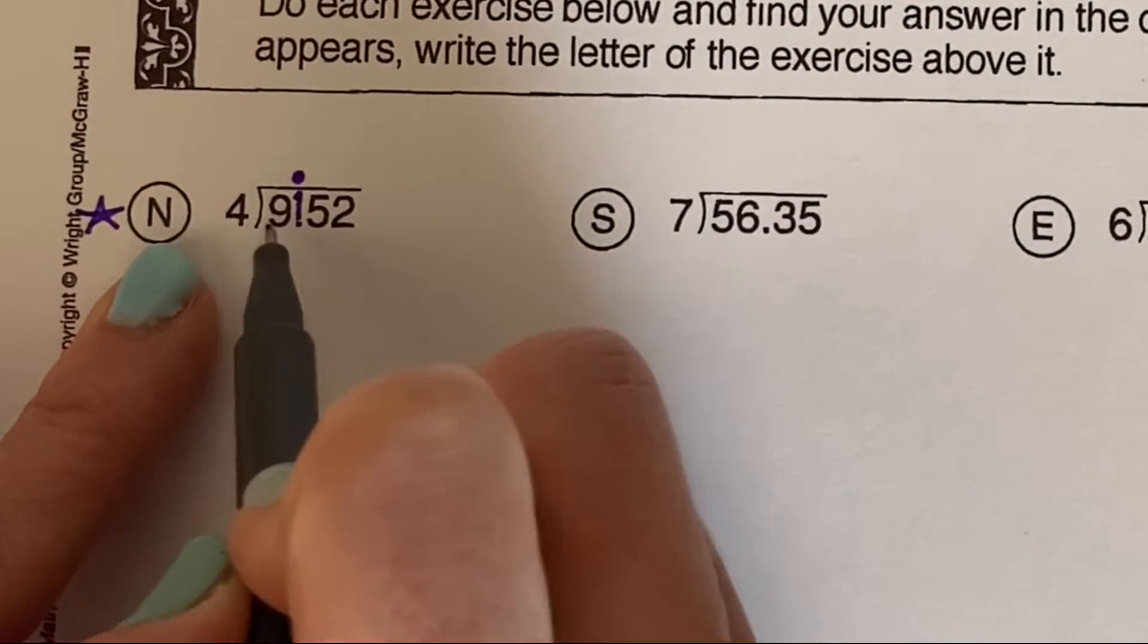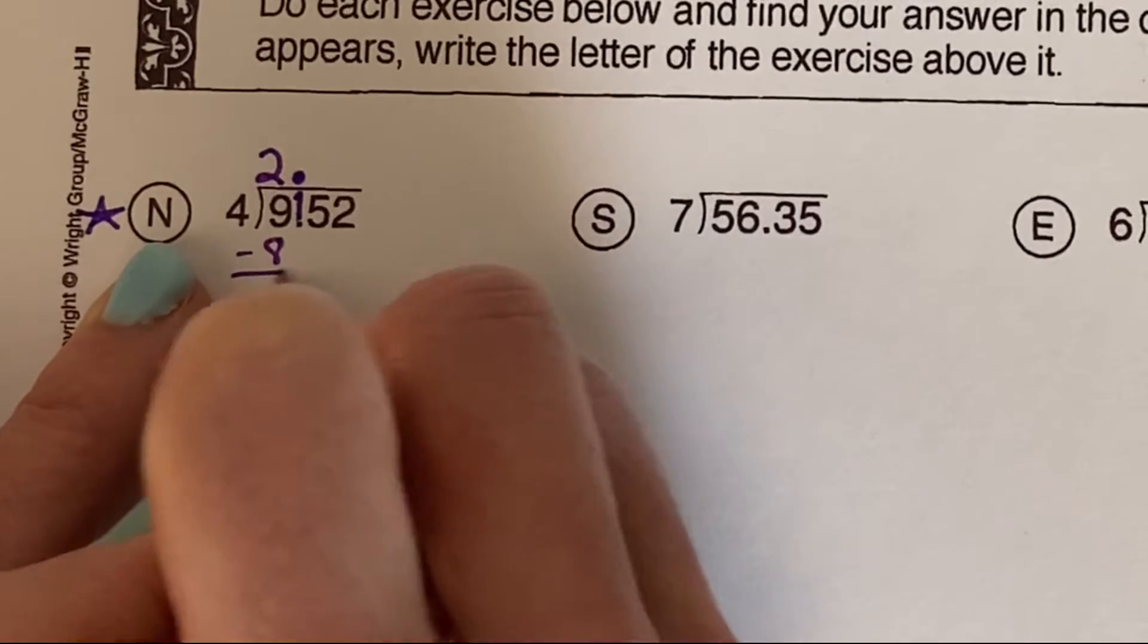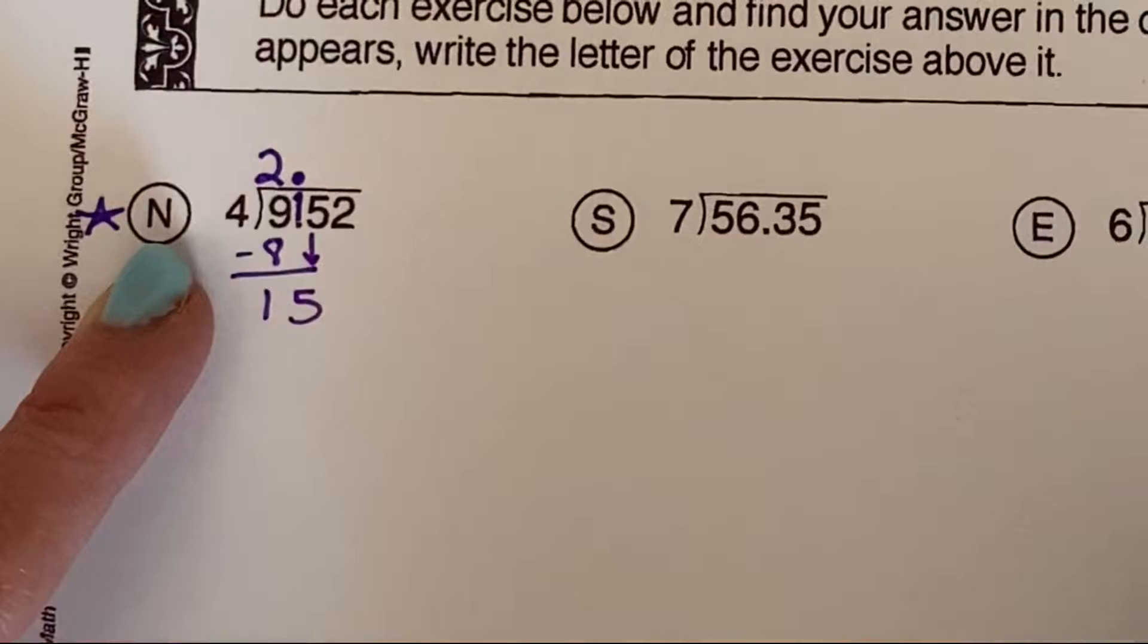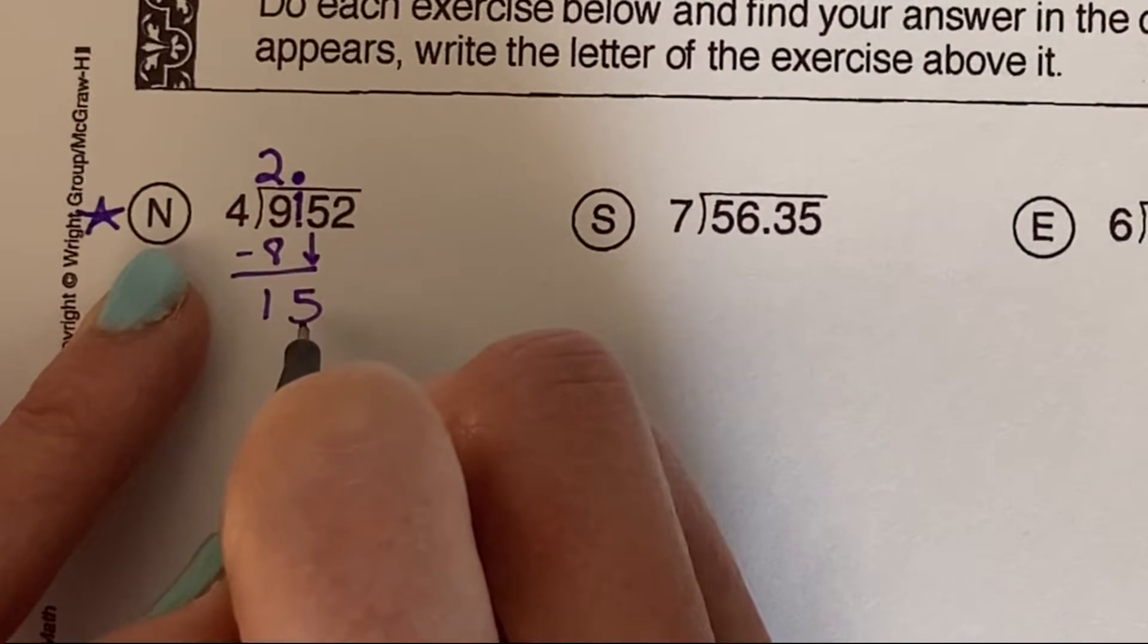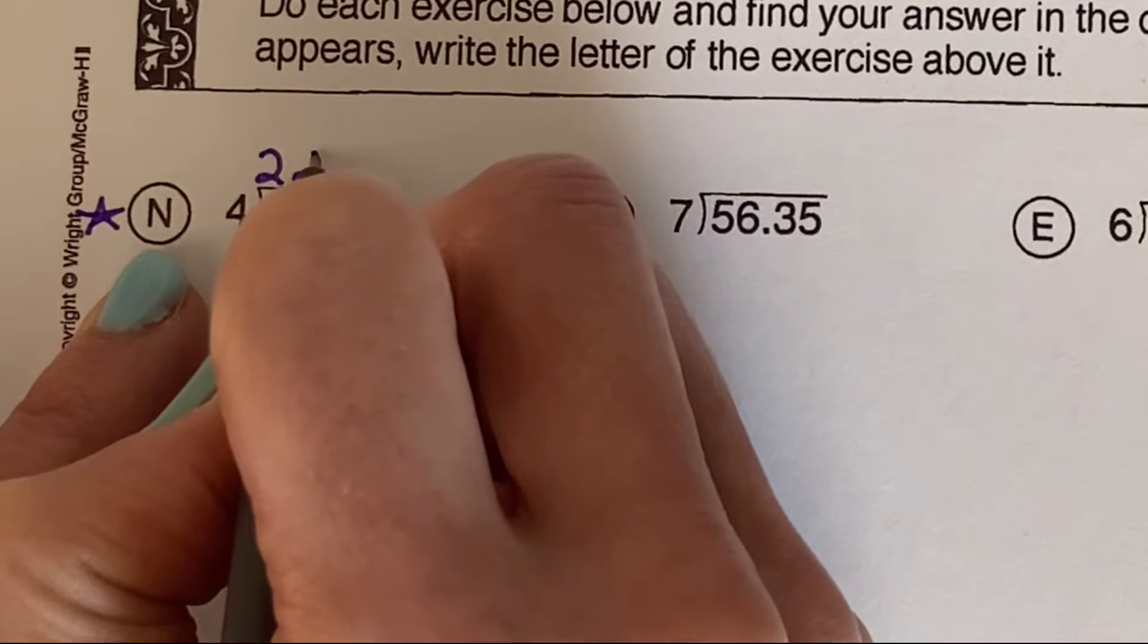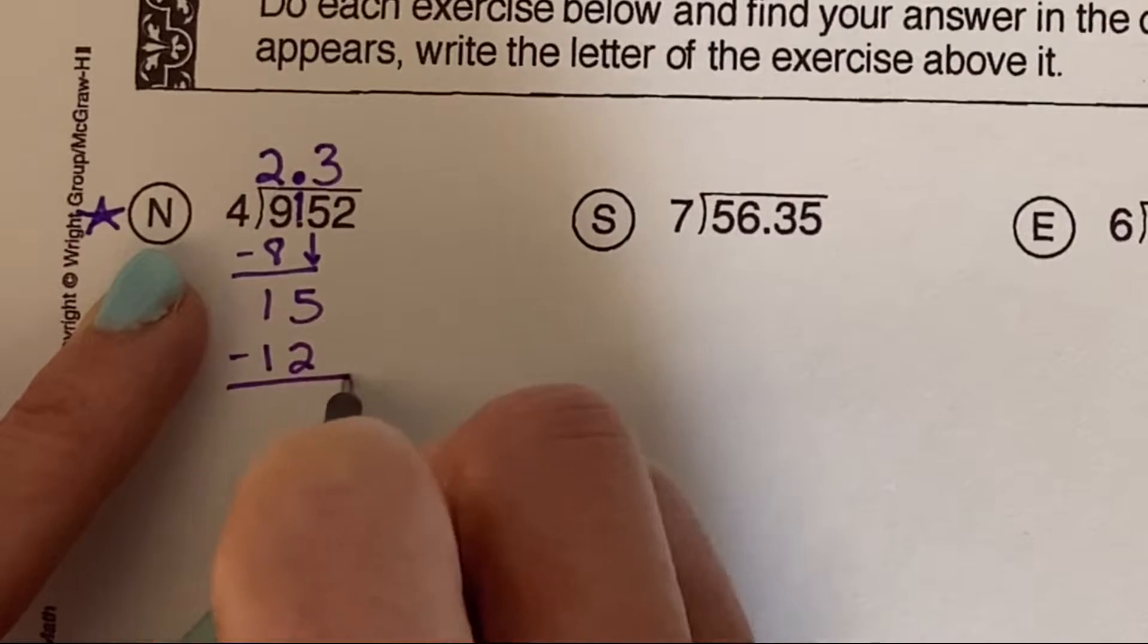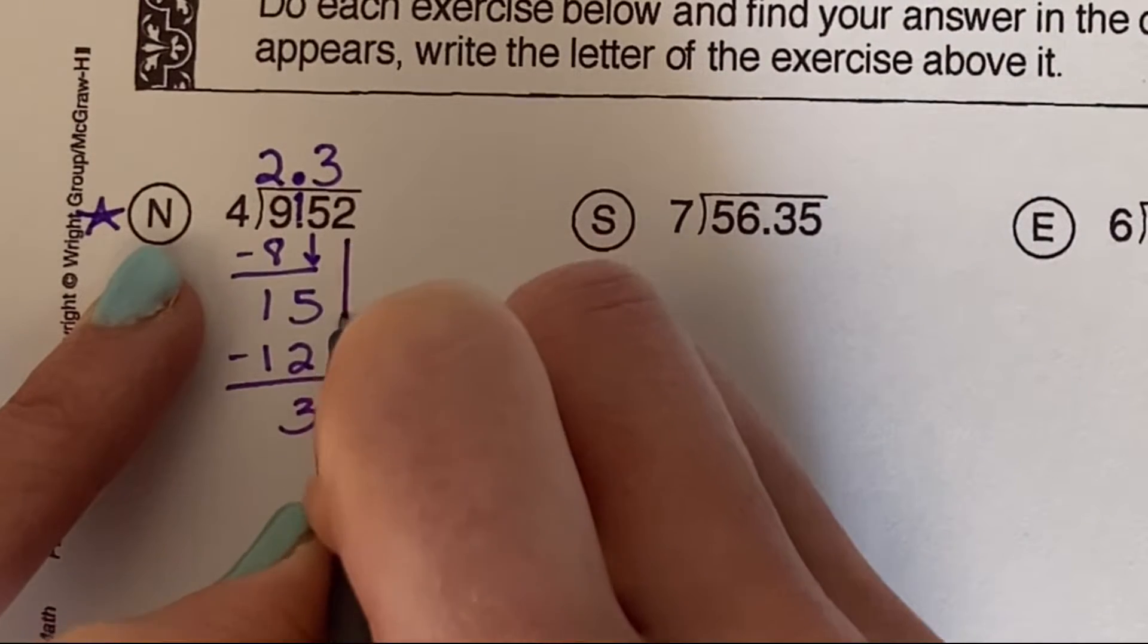All right, how many times does 4 go into 9? It goes in 2 times. 2 times 4 is 8. Bring down the 5. How many times does 4 go into 15? Well, it goes in 3 times, and that's going to go straight up. 3 times 4 is 12. Subtract. We get 3. Let's bring down the 2.